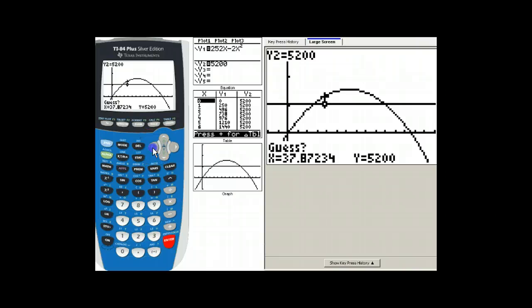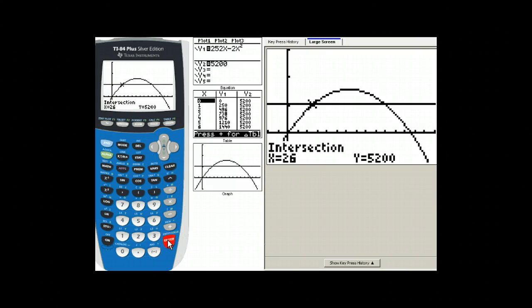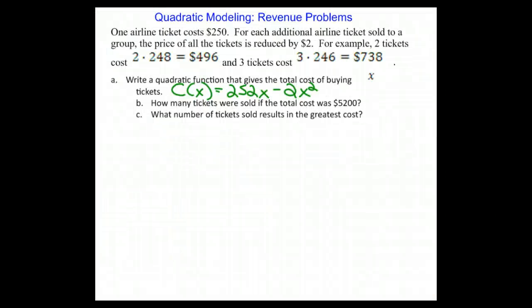Now the guess is important in this case because there are two choices. So I'm putting it here and I notice I have a result of 26 tickets sold cost $5,200. So at least part of the answer for part B was 26 tickets cost $5,200.